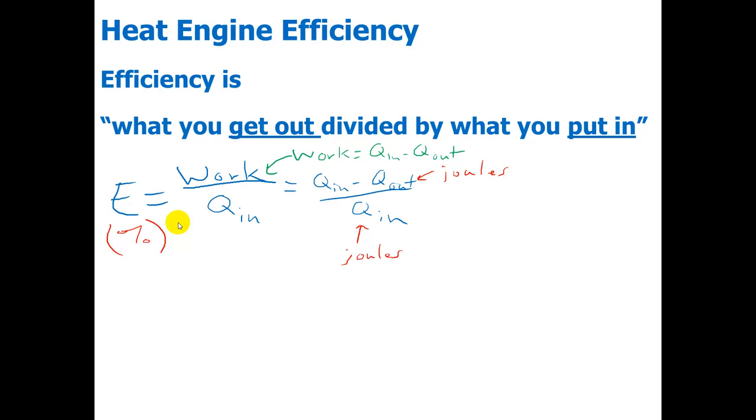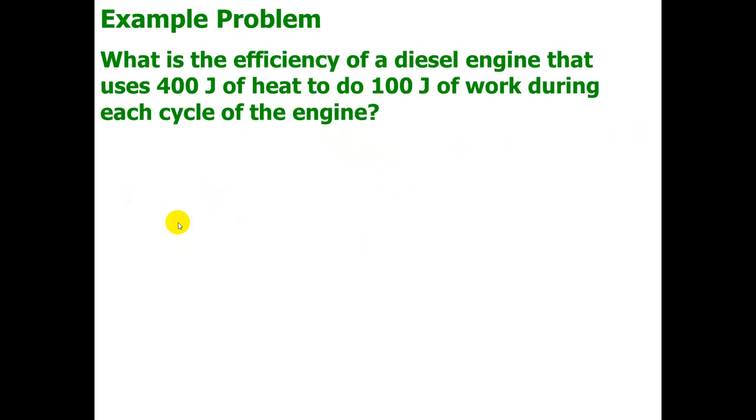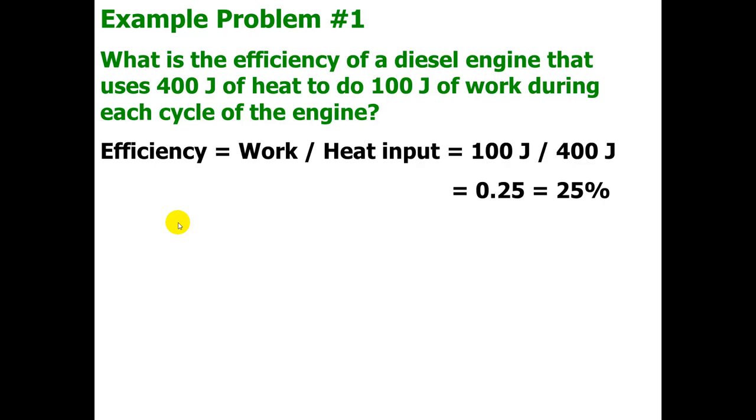Let's take a look at an example. What is the efficiency of a diesel engine that uses 400 joules of heat to do 100 joules of work during each cycle of the engine? I'd like you to try this on your own first. So go ahead and pause the video. Now, check your work with my solution. Efficiency equals work divided by heat input. It's 100 joules of work divided by 400 joules of heat input means 0.25 or 25% efficiency.